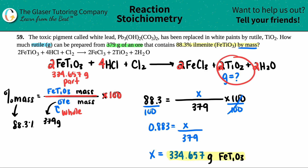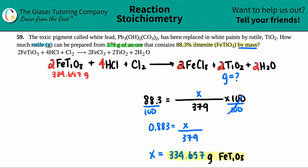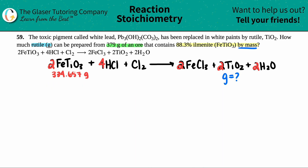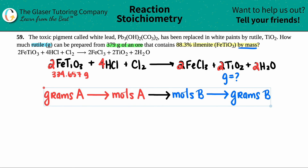Now we still want to find the grams of rutile, TiO2. We can always use stoichiometry — using ratios to go from one compound to another using a balanced equation. The flow diagram we've been using is: grams to moles to moles to grams. The reds are always your starting number; whatever you want to find out is blue because that's the ending.